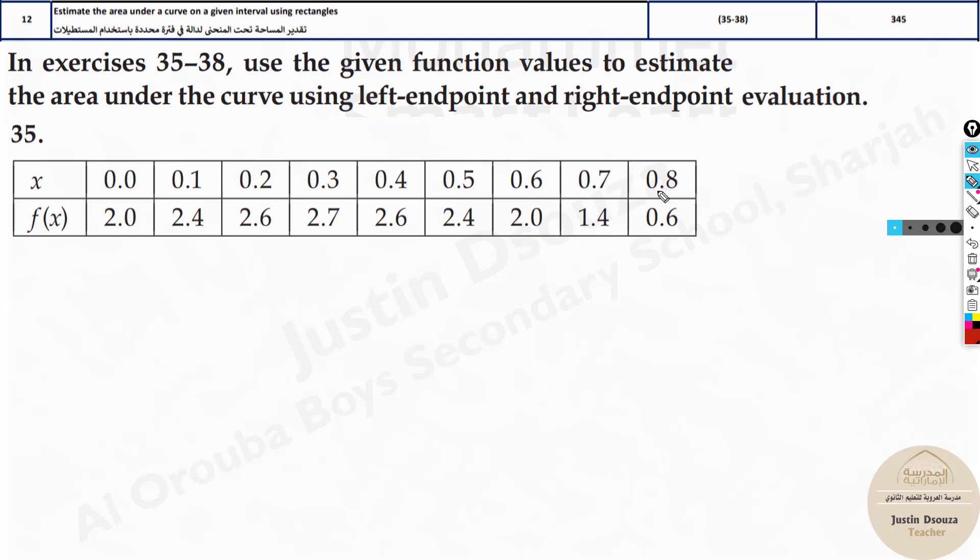Whereas in the right endpoint method we'll start from the right side and we omit the last left value. That is the only thing you need to know in this topic. It's such an easy one.